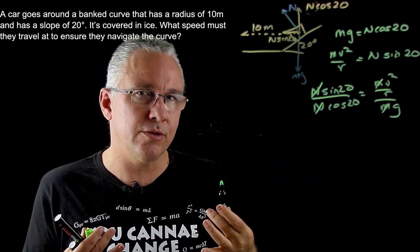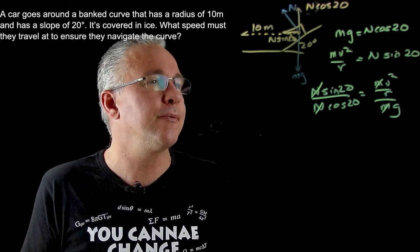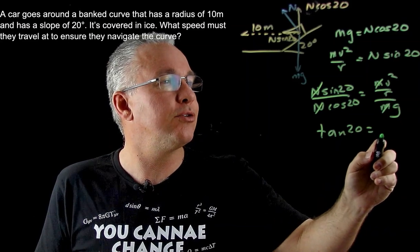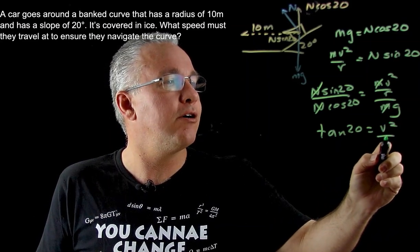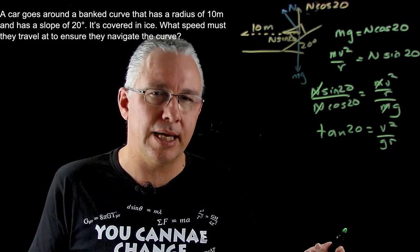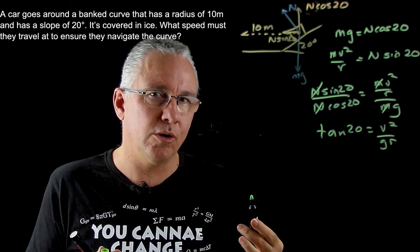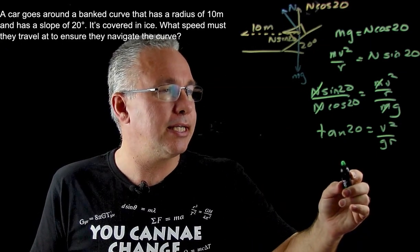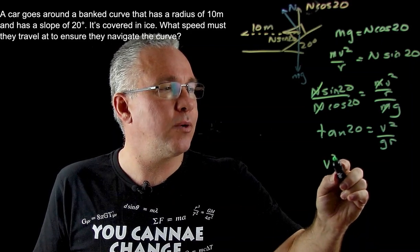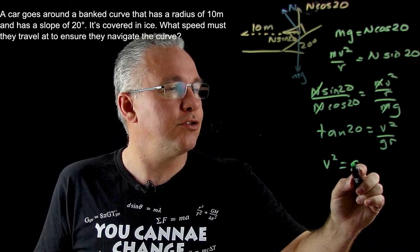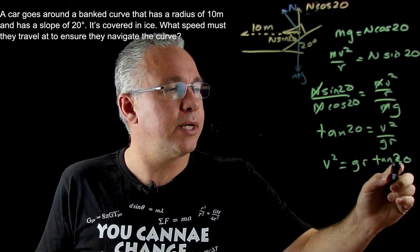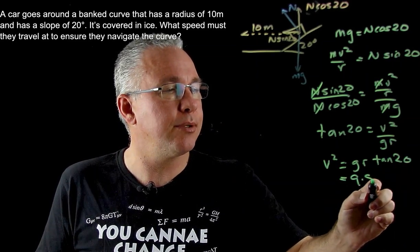Then all I have left now is tan 20 is equal to v squared over gr. Do you see what happens here? This looks like a conical pendulum situation again in terms of the mathematics. So what I get here is that v squared is equal to g multiplied by r multiplied by the tan of my 20. Now g of course we know is 9.8. Our r is 10. Our tan 20 of course remains.